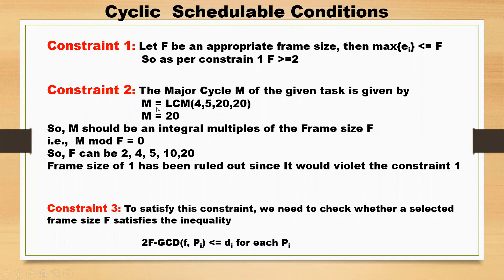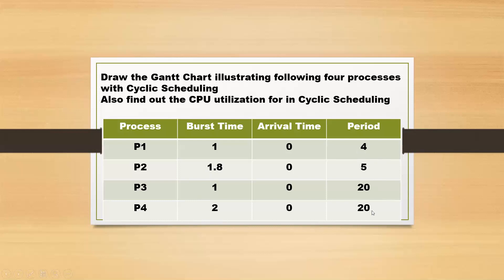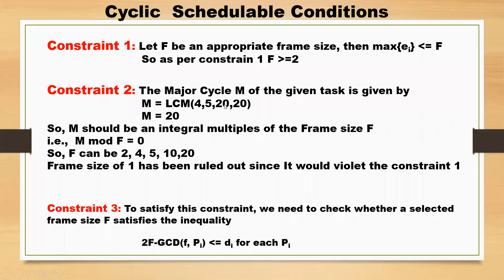For constraint two, the major cycle m of the given tasks is given by m equal to LCM of the periods 4, 5, 20, and 20. The LCM is 20, so m equals 20. m should be an integral multiple of the frame size, so m mod f must equal 0. From this, the possible frame sizes are 2, 4, 5, 10, and 20. Frame size 1 is ruled out since it violates constraint 1.